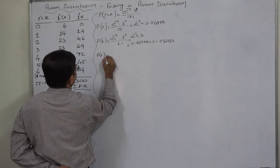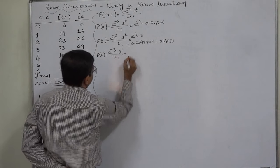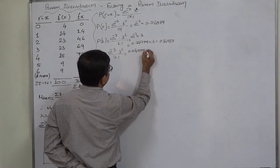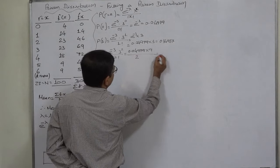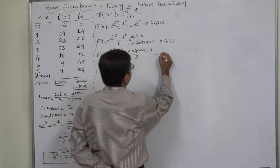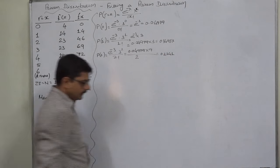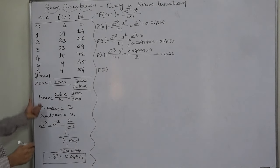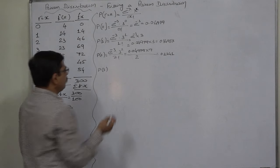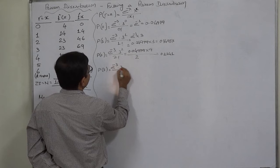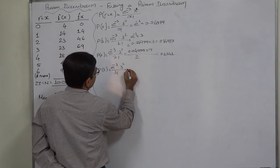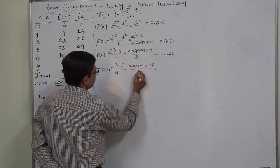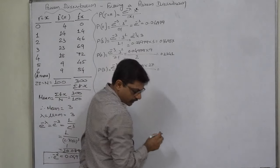For P(2): e raised to minus 3 times 3 squared divided by 2 factorial equals 0.04979 times 9 divided by 2, which comes to 0.2241. Similarly, for P(3): e raised to minus m times m raised to 3 divided by 3 factorial equals 0.04979 times 27 divided by 6, since 3 factorial is 6. This also comes to 0.2241.